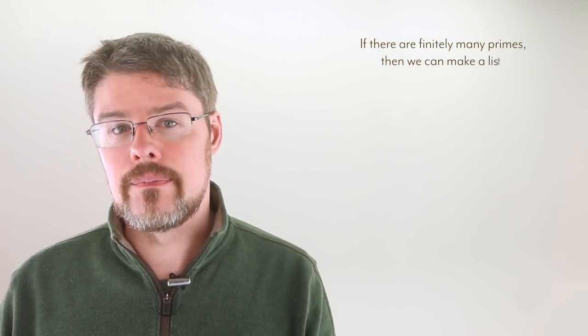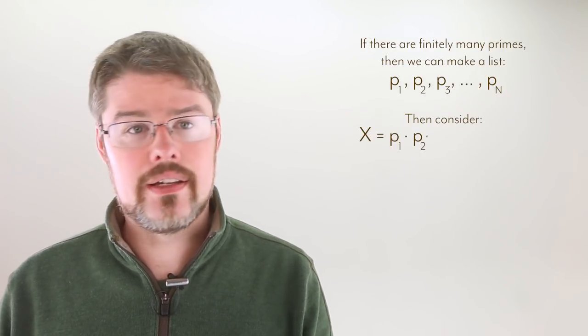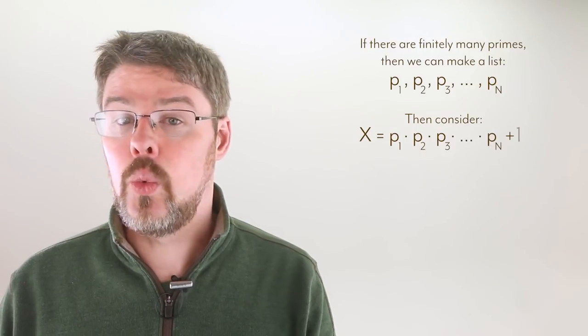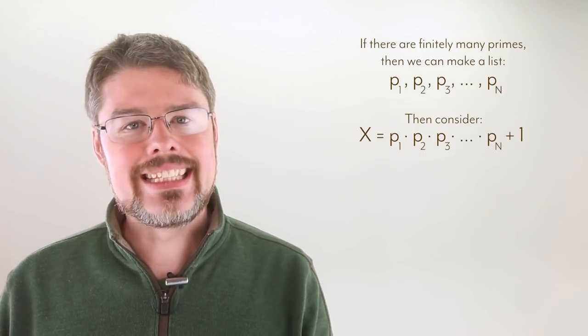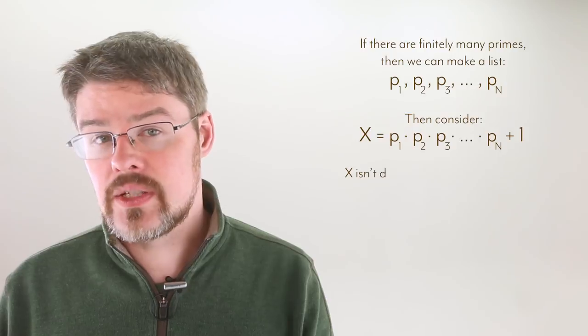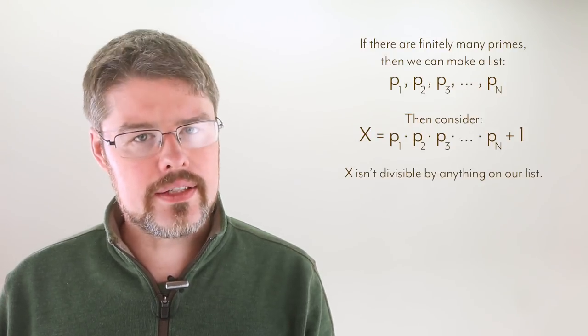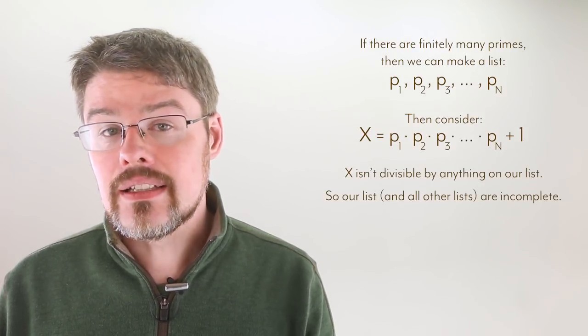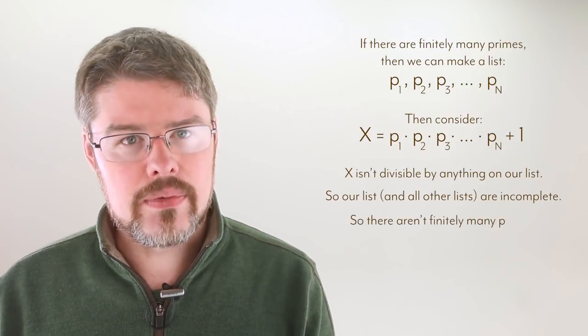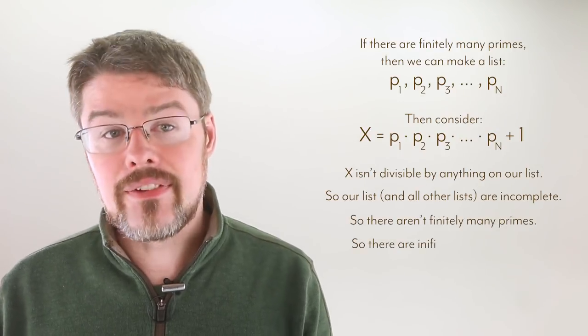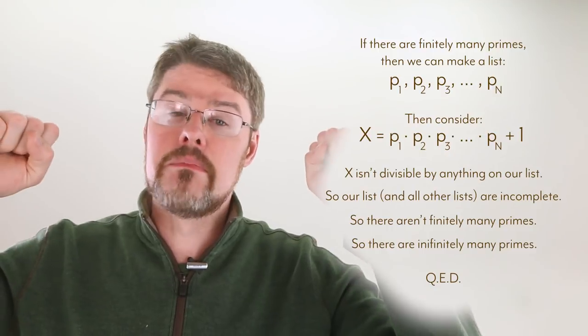If there are finitely many primes, then we can make a list of them. Make a new number by multiplying everything on the list together and adding one, and then show that this new number isn't divisible by any number on our list, meaning the list is incomplete, meaning that there aren't finitely many primes, meaning that there's infinitely many primes. Mind blown.